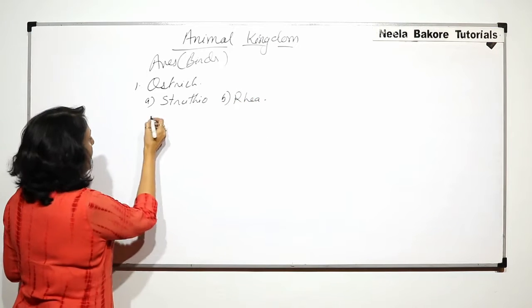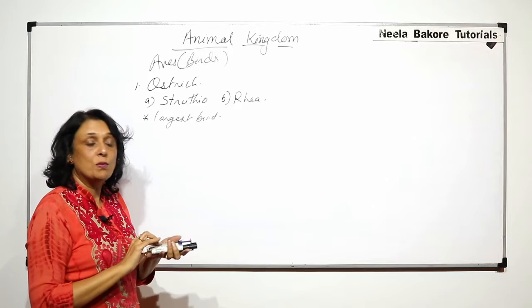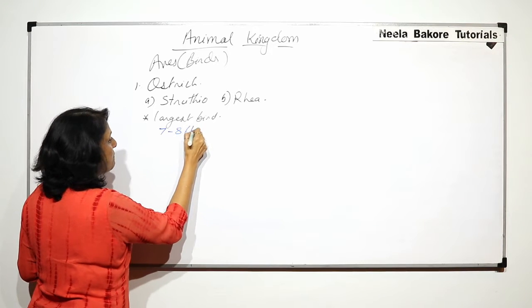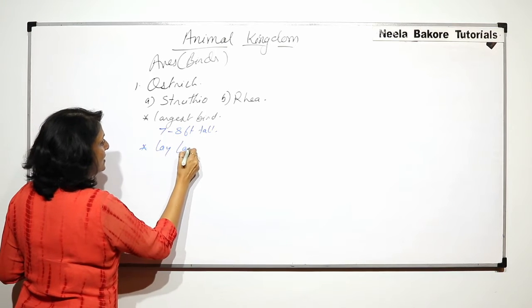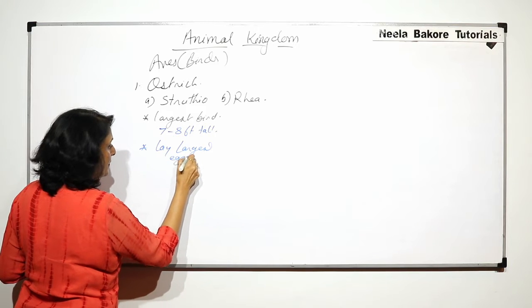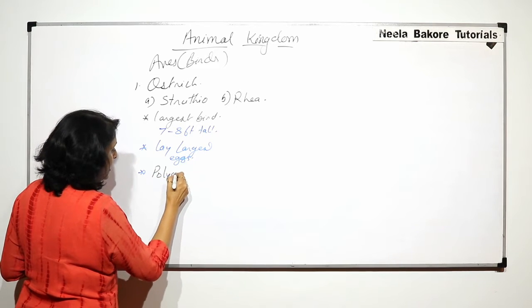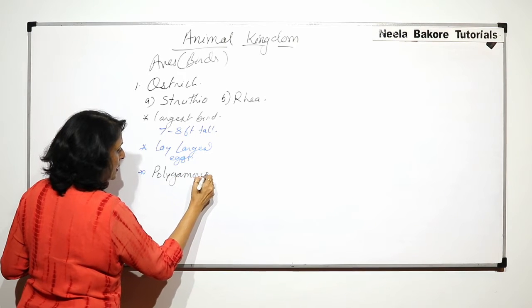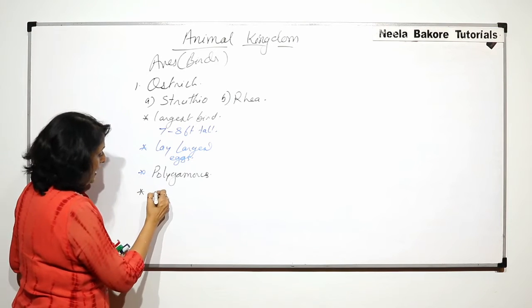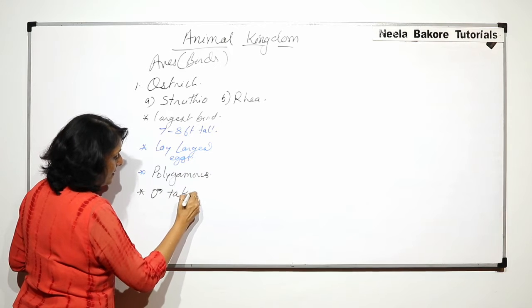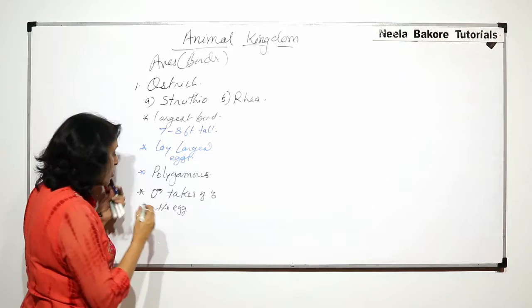Struthio is the largest bird and it stands almost 7 to 8 feet tall. Their eggs are also largest, so they lay largest eggs. Ostriches, especially Struthio, they are polygamous. That means one male copulates with many females and the male takes care of the egg, or we can also write that the males incubate the egg.